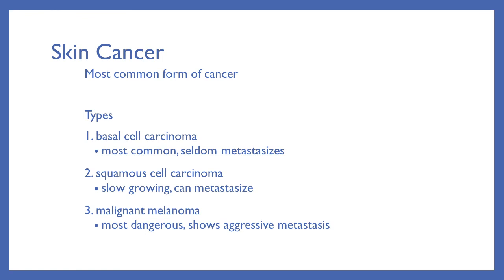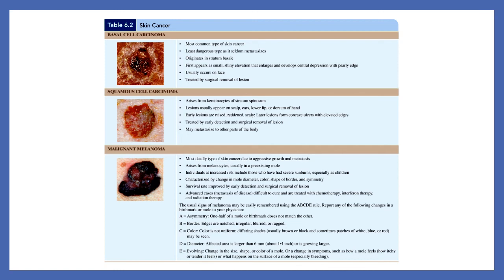Squamous cell carcinoma is slower growing but can metastasize if severe. Malignant melanoma is the most dangerous skin cancer — it aggressively metastasizes, traveling to other parts of the body from the melanocytes. When examining moles for malignant melanoma, we look for changes in color, irregular borders, asymmetrical shape, and apparent growth. We use the ABCDE method to help identify warning signs.